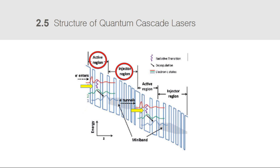At the injector region, there are multiple similar quantum wells connected to one another. Therefore, electrons tunnel through the regions to the next active region. When the electron encounters the next active region, it tunnels again and emits another photon. The QCL may have as many as 75 active regions, and each electron generates that many photons as it traverses the structure.